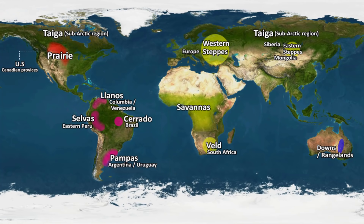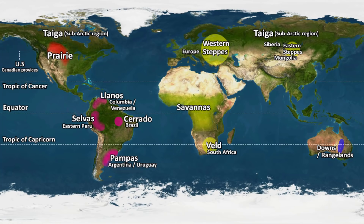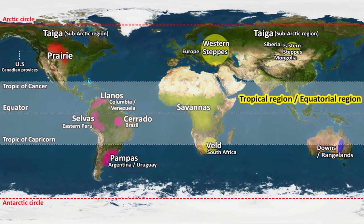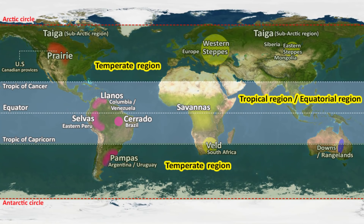Grasslands occur naturally on all continents except Antarctica, because grass doesn't grow on ice. As you can see on this map, grasslands are found both in the tropical region as well as in the temperate region. Tropical grasslands are closest to the equator and remain warm all year. Temperate grasslands are far from the equator and usually have warm summers and cold winters.